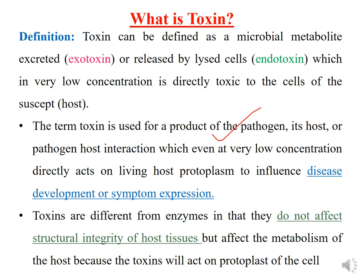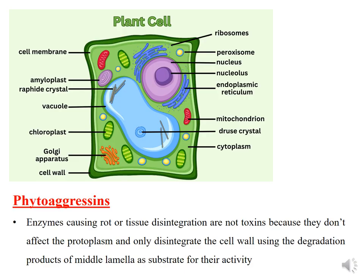Toxins are different from enzymes. Enzymes also play an important role in disease development, but toxins do not affect the structural integrity of the host tissues whereas enzymes will influence structural integrity of the host tissue — the cell structure. Toxins will affect the metabolism of the host because they act directly on the protoplasm of the cell. Here you can see the plant cell structure — how these toxins enter into the cell and alter the metabolic process of the host cell to produce disease.